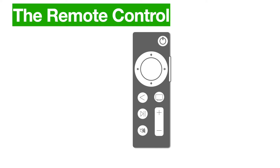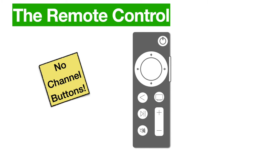Note: nowhere on this remote are channel buttons, because you can't use channel buttons on the Spectrum app on Apple TV. So that's a big ding in terms of how it works versus the Zumo box.